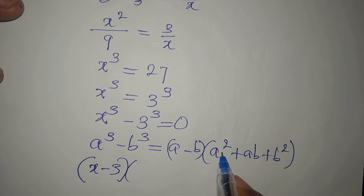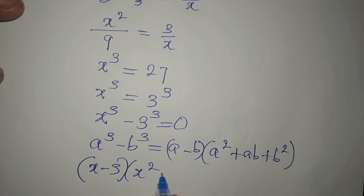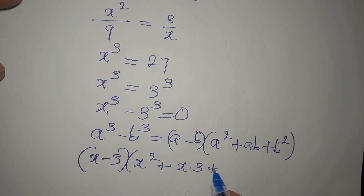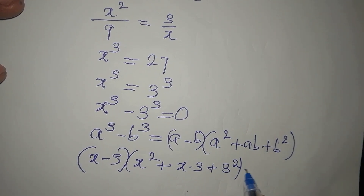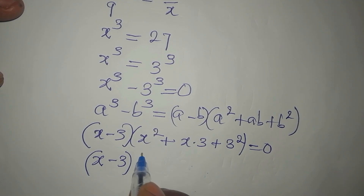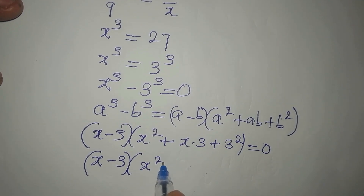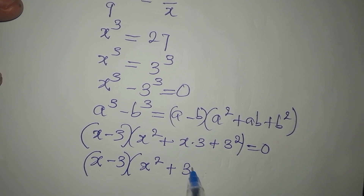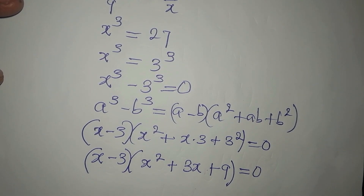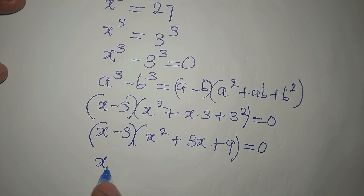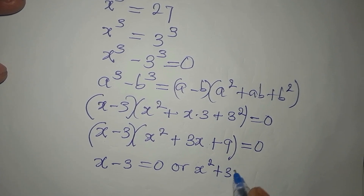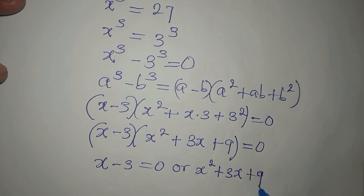We'll now have a squared is going to be x squared, then plus ab, that would be x times 3, then plus b squared is going to be 3 squared. Remember, everything is equal to 0. x minus 3 is here, and then we now have x squared plus x times 3 is 3x, then plus 3 squared is 9, and this is equal to 0. So from here, it's either x minus 3 is 0, or x squared plus 3x plus 9 is 0.